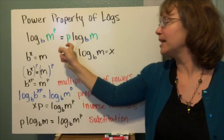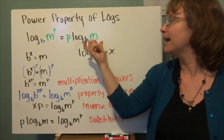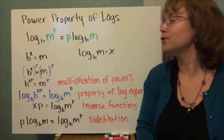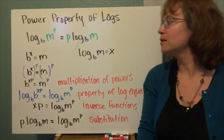You can go the other way as well. If you have a number times log base b of m, it can be written as log base b of m to that number power. So we're going to prove this property.